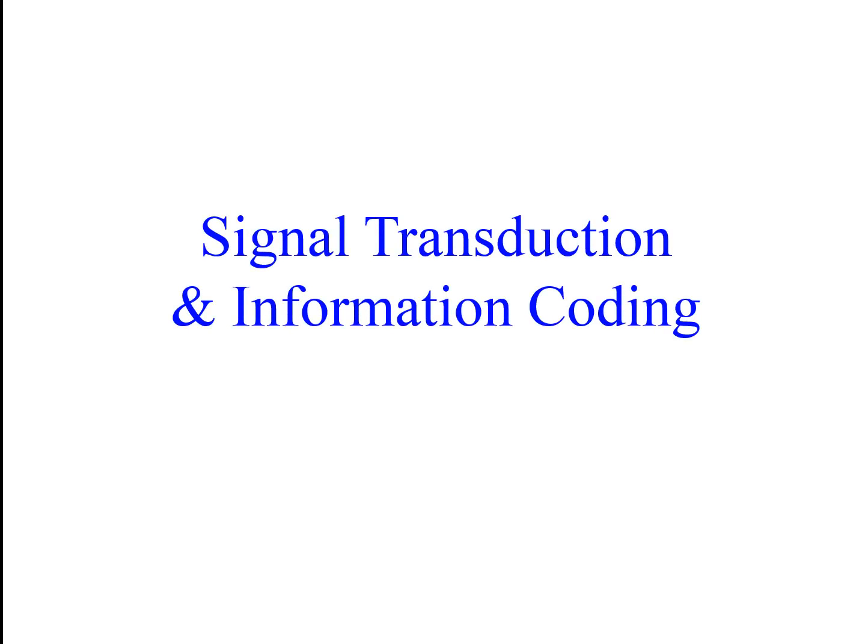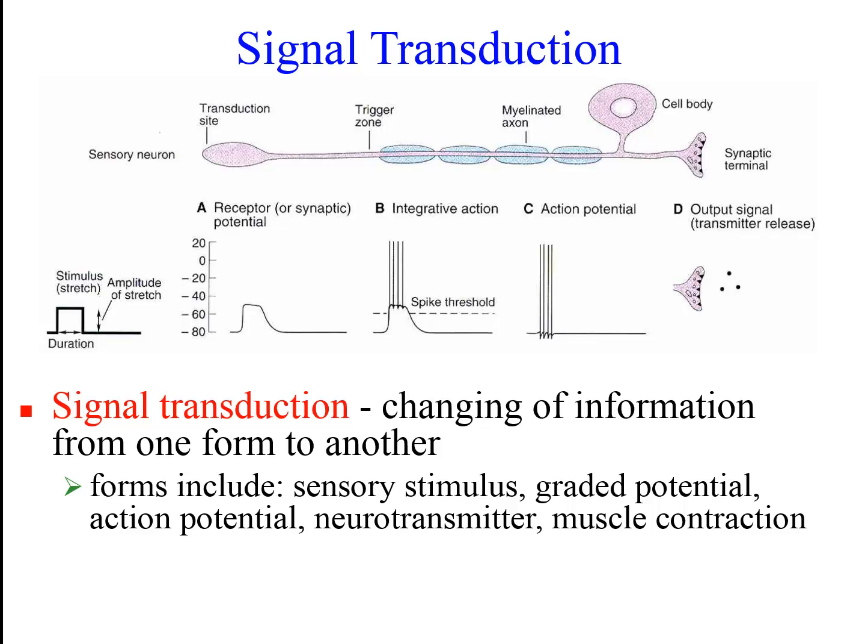The goal of this screencast is to review signal transduction and information coding. Recall that signal transduction is a changing of information from one form to another. For example, from a light stimulus into a graded potential, or an action potential into the release of neurotransmitter.